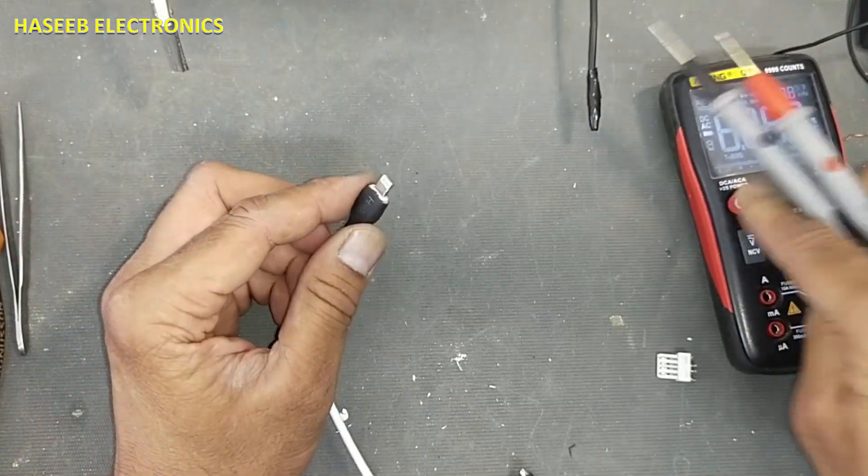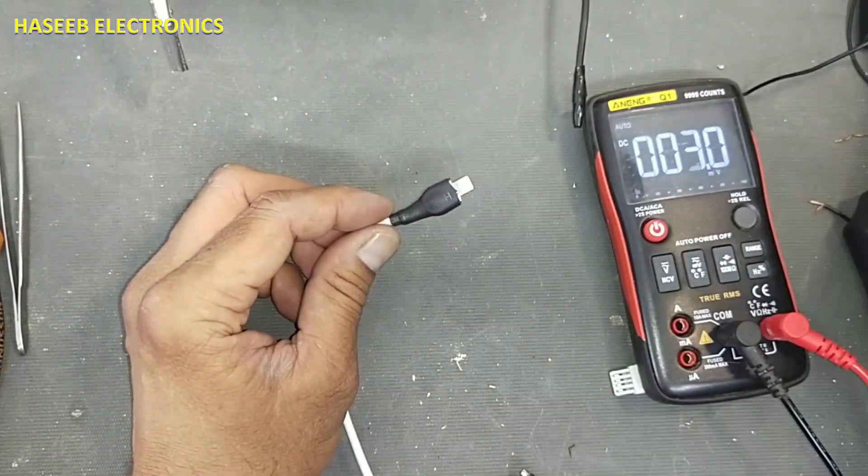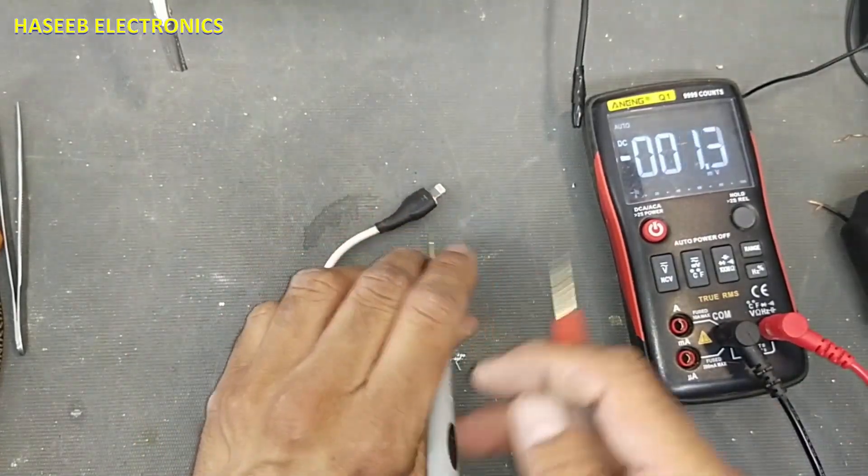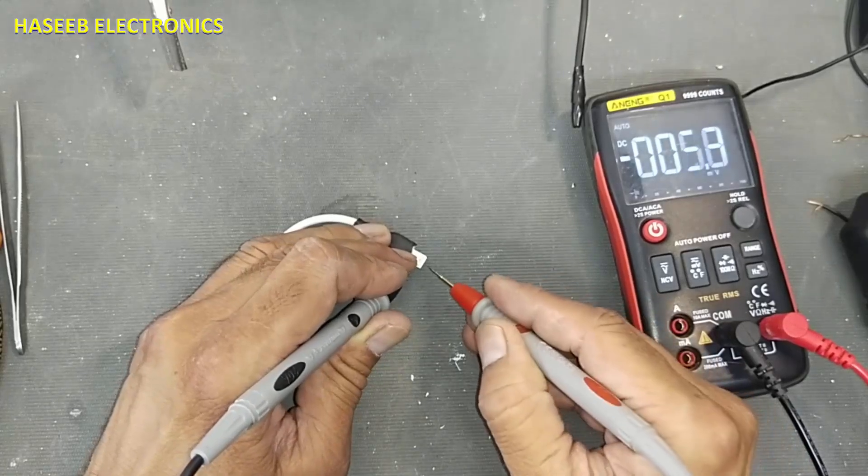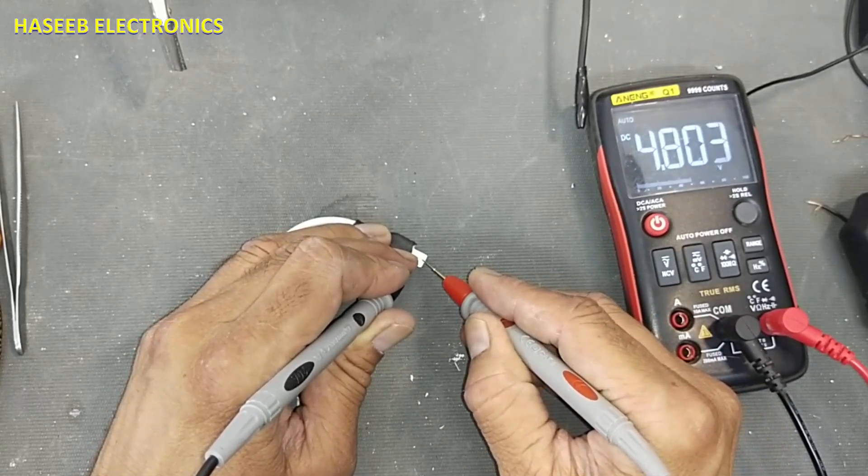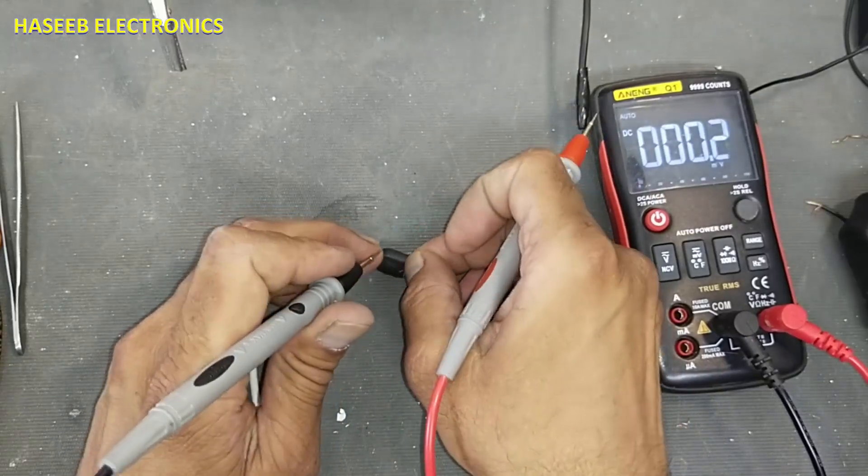Finally we will check the voltage, DC voltage. First pin and pin number five. Yes, that's good. Rotate the side. First pin and pin number five. So this cable is now ready.